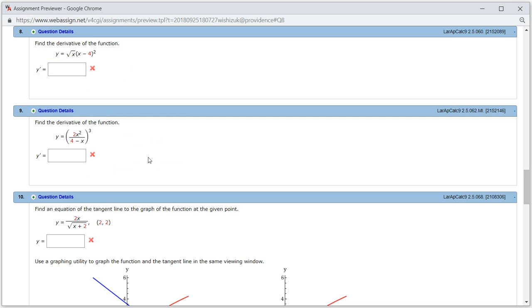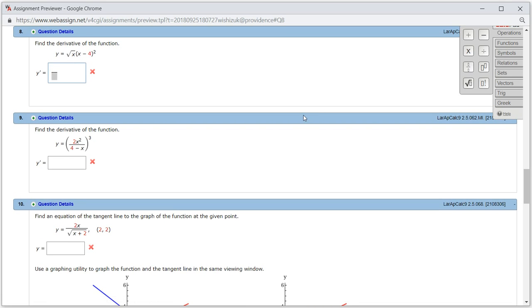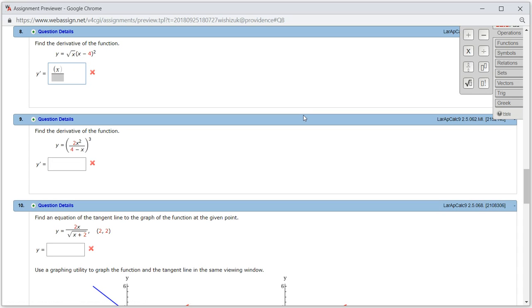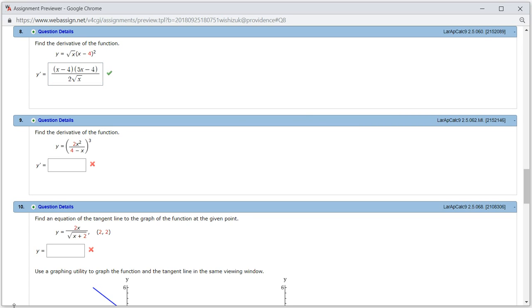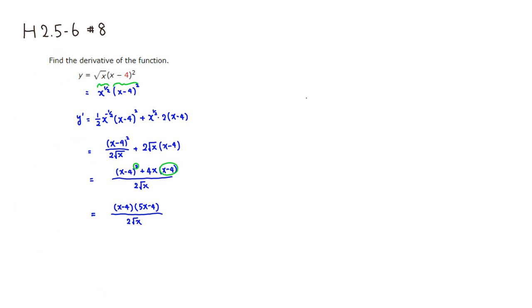So let's type it in. So what we got was, let's see, a fraction. And we're going to have x minus 4 times 5x minus 4. Then you have a 2 square root of x. So let's check the answer. I came back and it looks like we got this one correctly. That's it. I hope that this was clear.